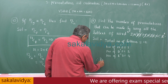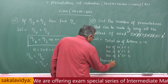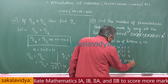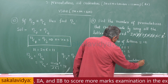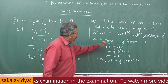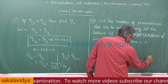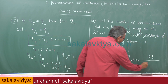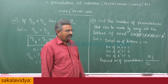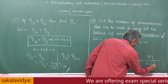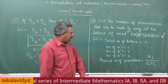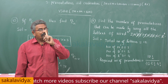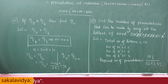Therefore, the required number of permutations equals 12 factorial divided by 3 factorial (for N's) times 2 factorial (for D's) times 4 factorial (for E's). This is the answer, and it is very, very important even for the MSET examination.